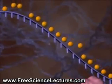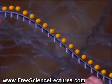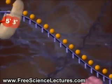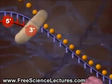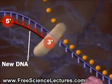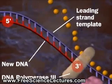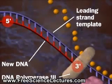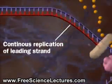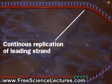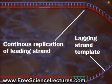One DNA strand encodes the leading strand, which forms from its 5' to its 3' end using DNA polymerase 3. No problem here, but the lagging strand presents problems.